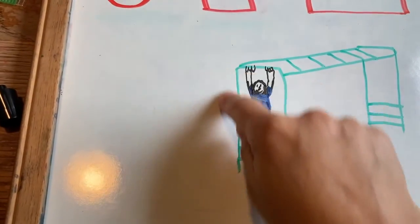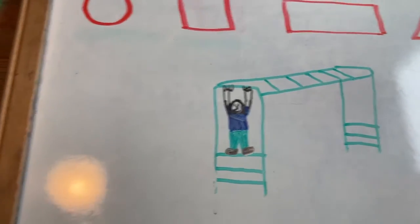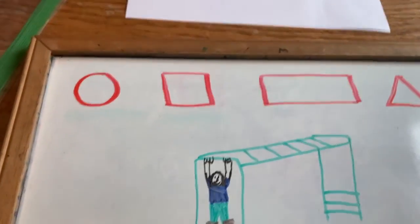Shapes. So what shape is the monkey bars? Rectangle. All right, have fun.